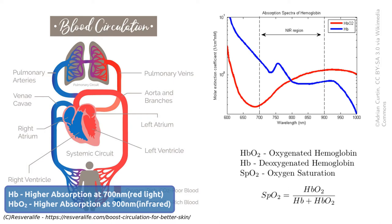Similarly, red light is around 700 nm. So if I pass red light, I will also get a reduced output because it is absorbed. Now we have these two measurements, and we can derive a relation from them which allows us to calculate SpO2.